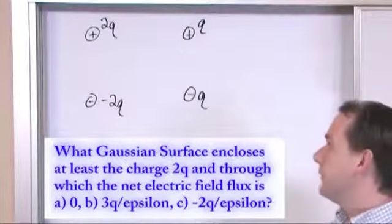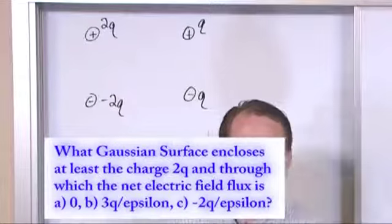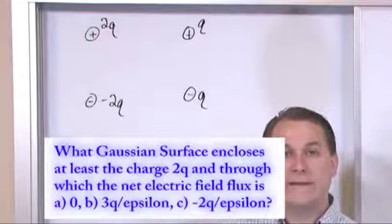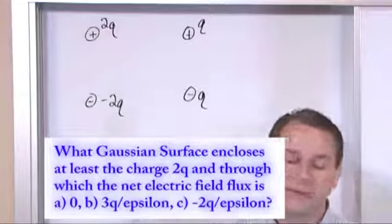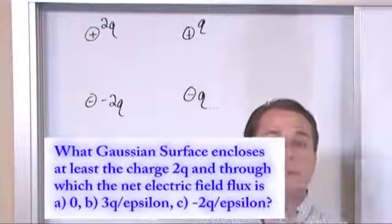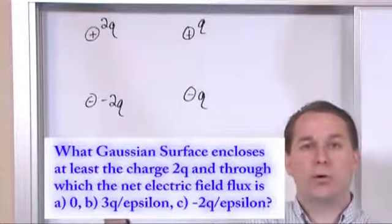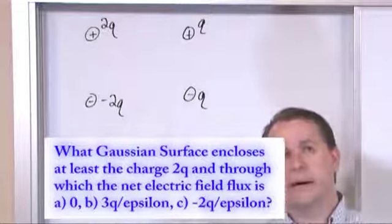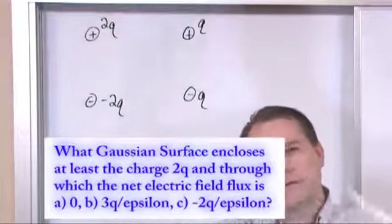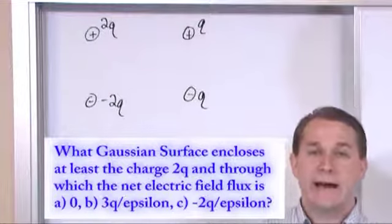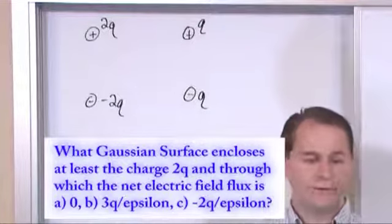But you know you have an electric field here, so you know that you can draw a random Gaussian surface however you'd like, and then you could calculate the electric field flux flowing through that surface. Now remember, when the field flux is going out of a surface outward, then we say that the flux is positive, that's our sign convention. And when the field is flowing into a surface, we say that that is negative, a negative electric field flux.